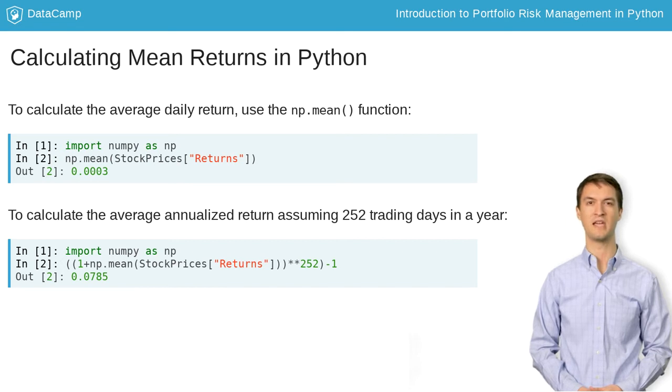For example, a daily return of just 0.03% works out to an annualized return of 7.85% when it is compounded every day for 252 trading days in a row.